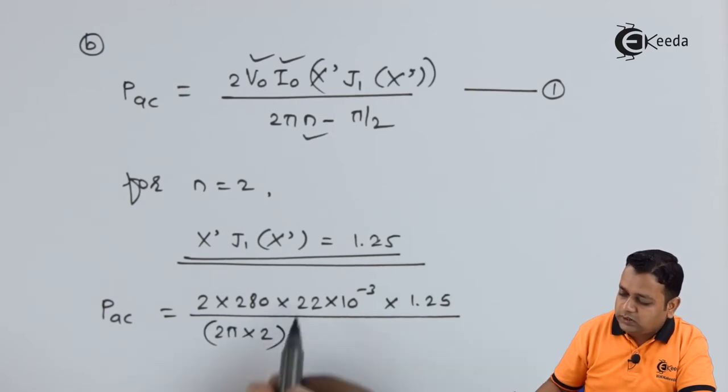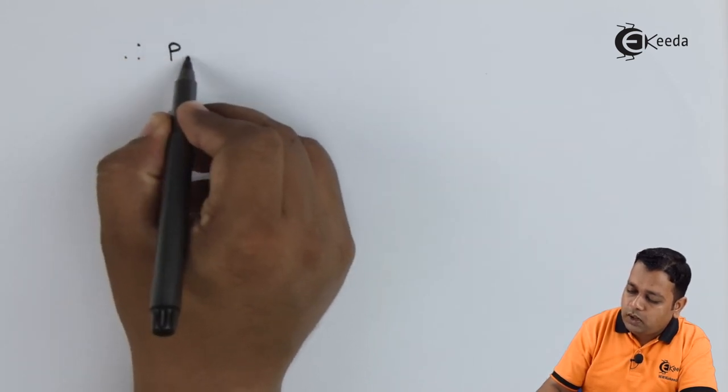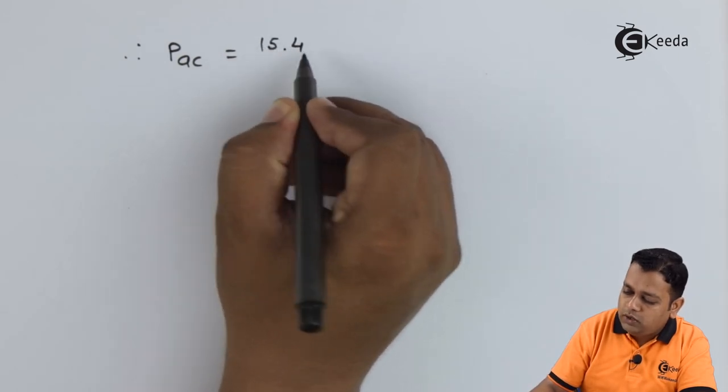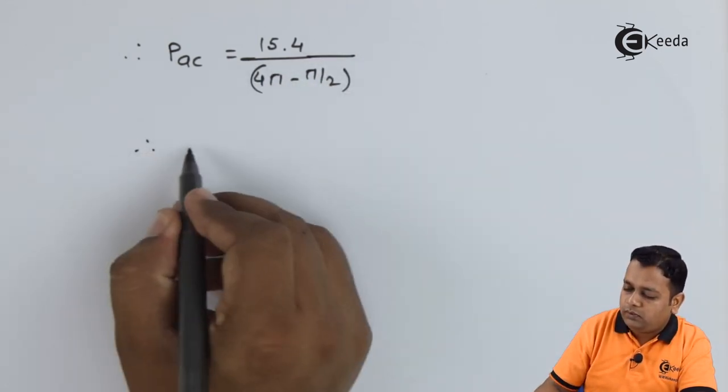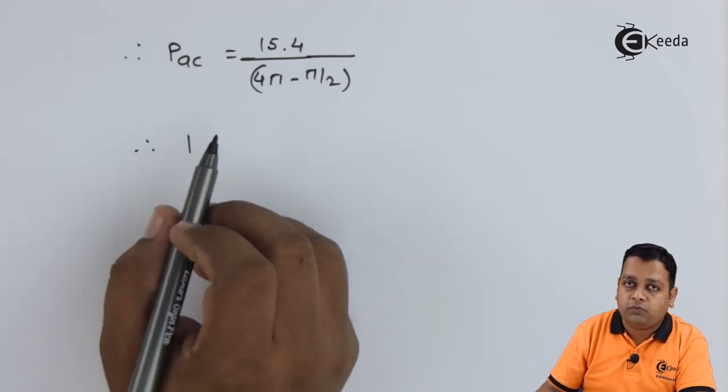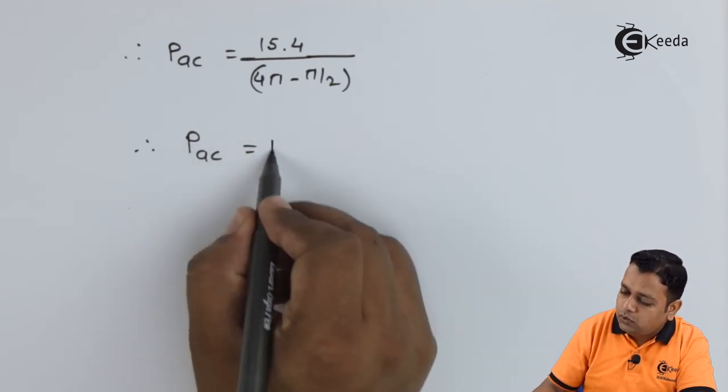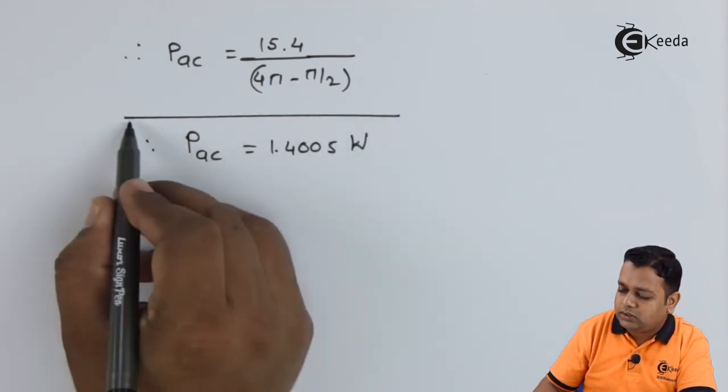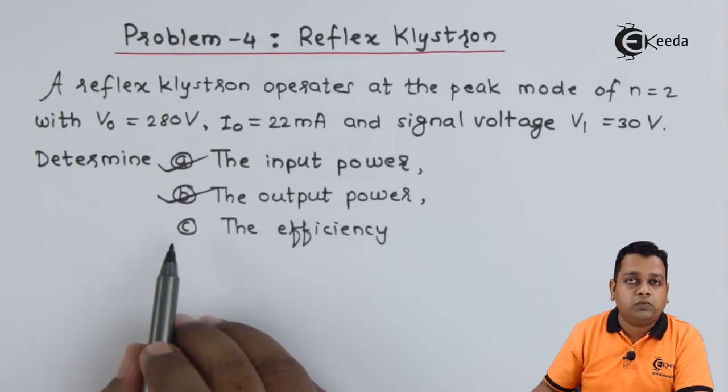So therefore by the next step we can write output power P_ac in the simplified form. It will be 15.4 divided by 4π minus π by 2 in the denominator. Therefore substituting the π value 3.14 we obtain P_ac the output power for the reflex klystron is equal to 1.4005 watts. So I outline this answer. So this way the part b output power that also we have computed.